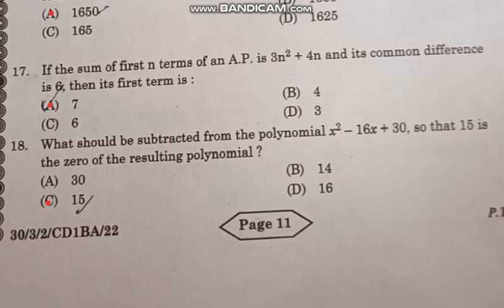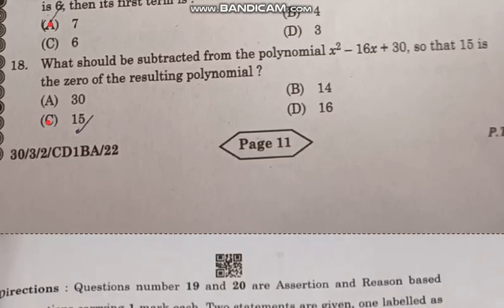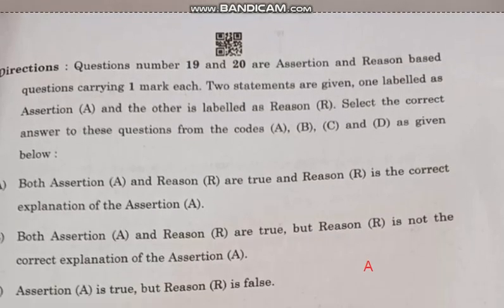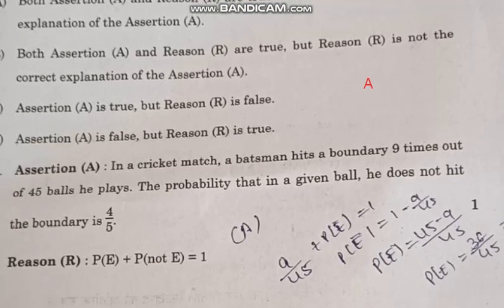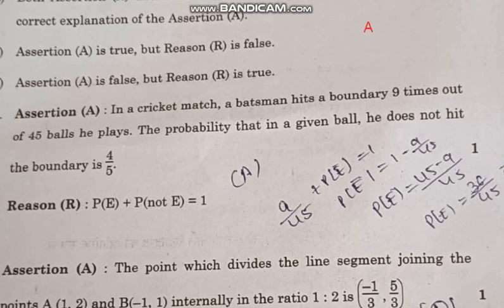Question number 18: What should be subtracted from polynomial X squared minus 16X plus 30 so that 15 is the zero of the resulting polynomial? Correct answer option C, 15.